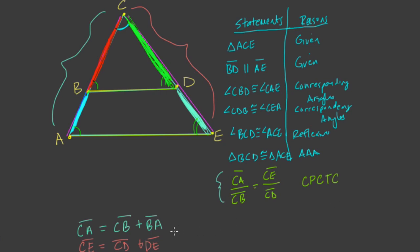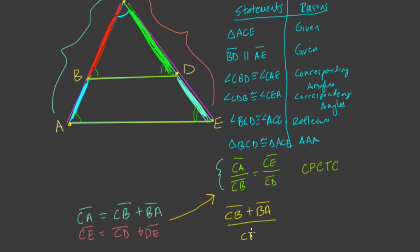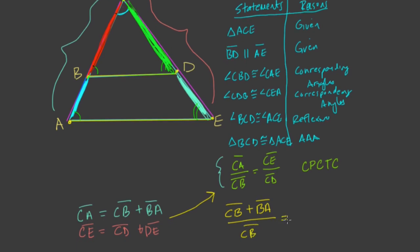Now, if we substitute these into our proportion here, we get a lot closer to the side splitter theorem. So for CA, I have CB plus BA over CB, that's the left side, equals CE, but CE we can write as CD plus DE, that's the statement right here, over CD, just like that.